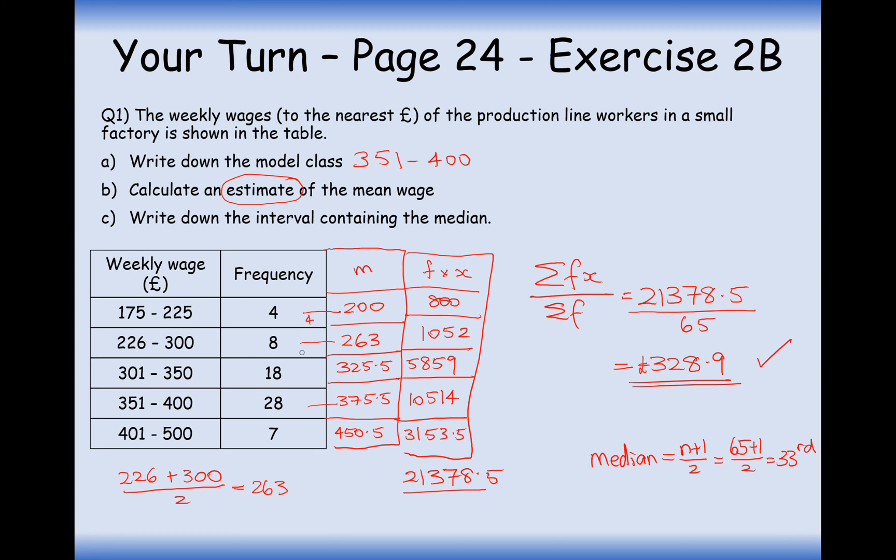So we've got 4 in here. We've got a total of 12 up until this point here. So we're doing a little cumulative frequency. We've got 30 up until this value here, and then we've got 58 up until this group here. So the 33rd value must exist in this group here. So write down the interval containing the median. That's going to be 351 to 400.